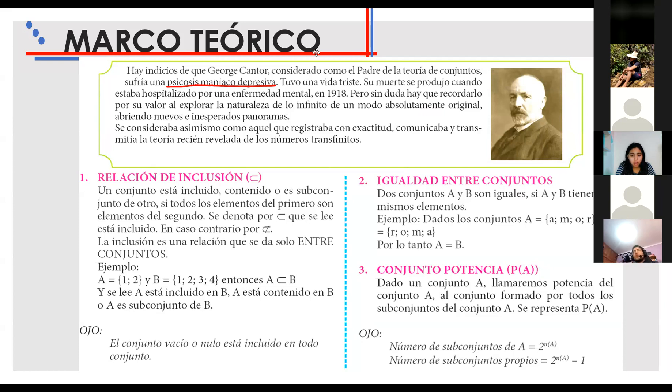Ahora sí, vamos a centrarnos en el tema, ya. Relación de inclusión. Bien, nos dice, un conjunto está incluido o contenido o subconjunto de otro. Si todos los elementos del primer elemento, de elementos del primero son elementos del segundo, se nota por una u invertida, ya, que se lee, está incluido. En caso contrario, diríamos, no está incluido, ¿no? Y el símbolo sería la u con una rayita, ya, con un eslarge.